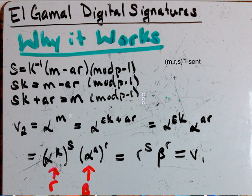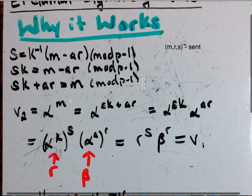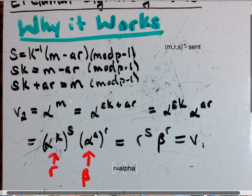And then recalling just the properties, we know that r equals alpha to the k. That's just part of the signature.